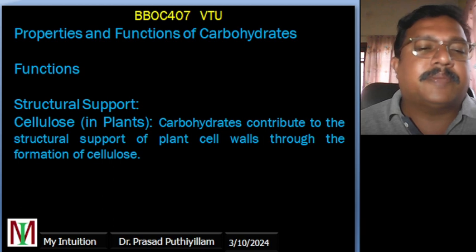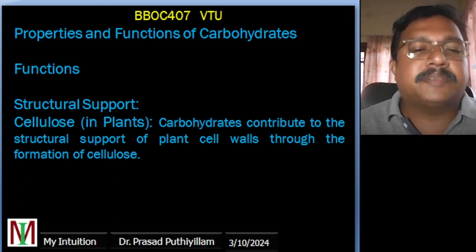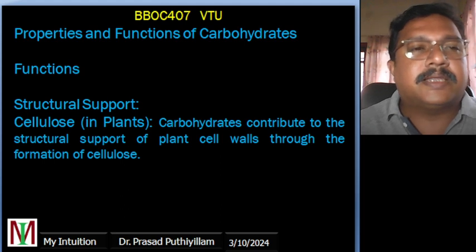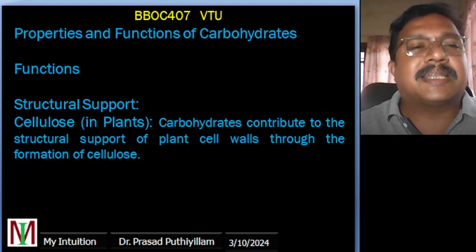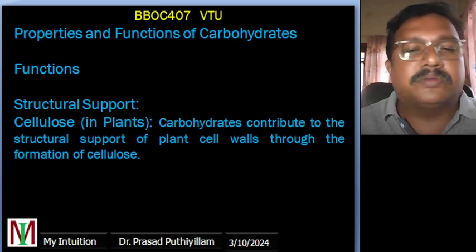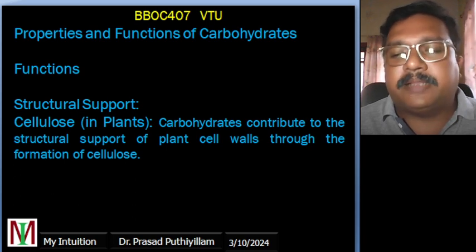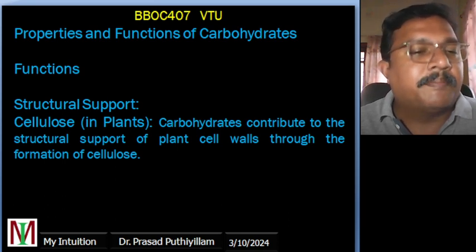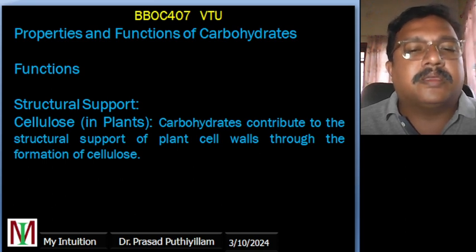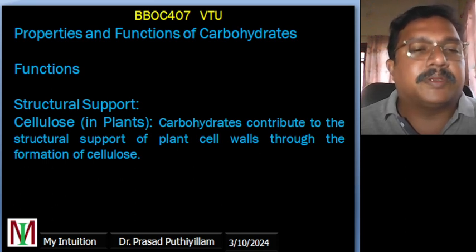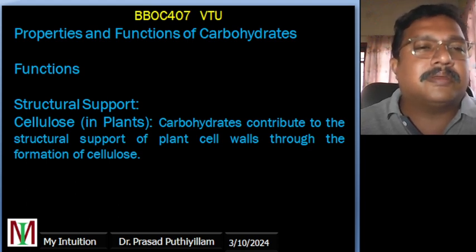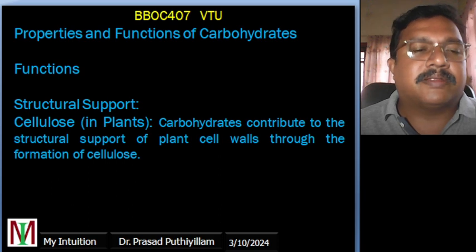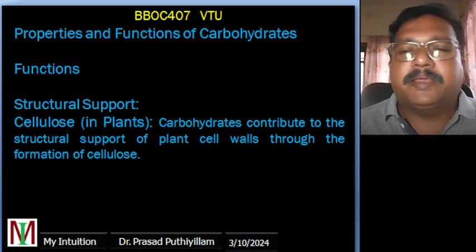Structural support is another function of carbohydrates in plants. Cellulose, a complex carbohydrate, is a major component of plant cell walls. It provides structural rigidity and support to plant tissues, allowing plants to stand upright and maintain their shapes. Cellulose also plays a role in protecting plants from physical damage.